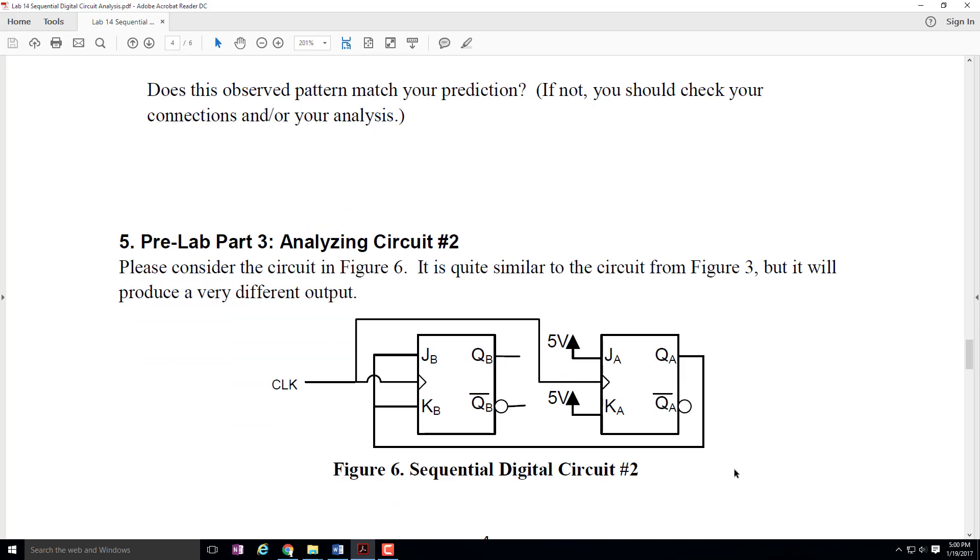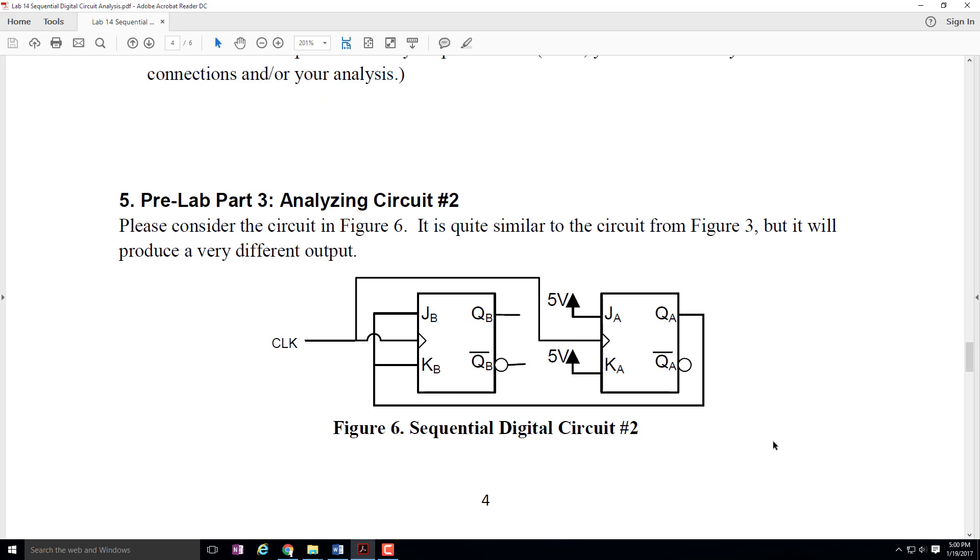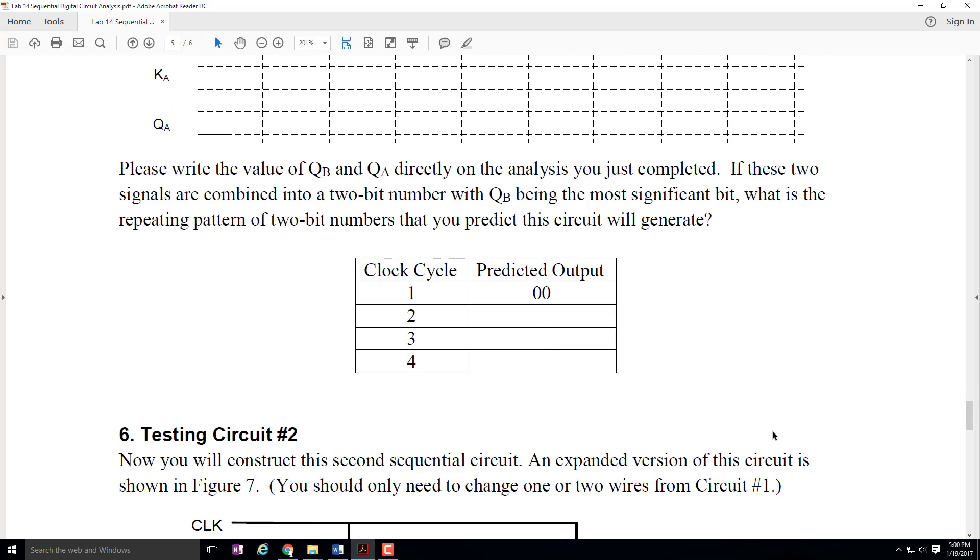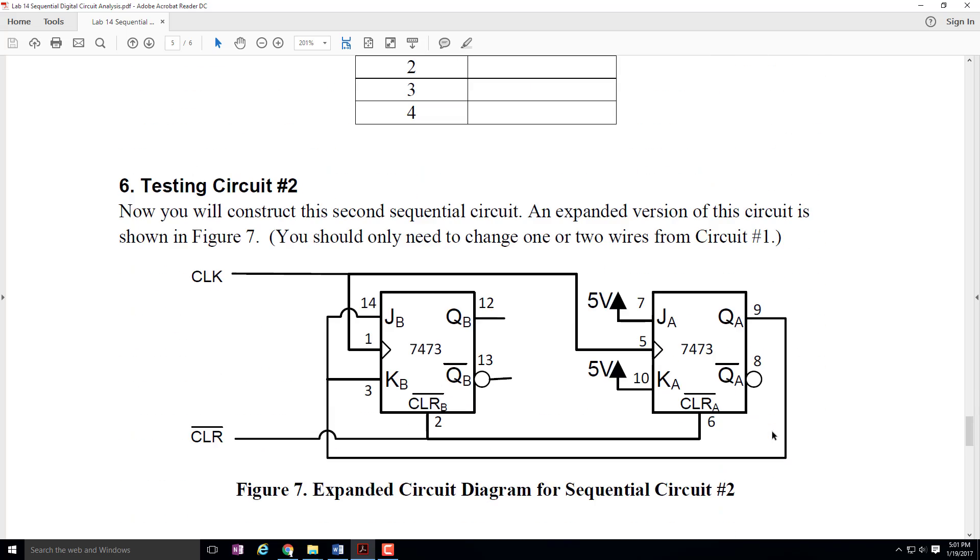And then second, we're going to have you analyze the second circuit. Here, instead of connecting to Q sub A bar, we connect up to Q sub A. This will actually generate a pretty significantly different pattern. So I'd like you to analyze it, just as before, and write the predicted outputs here, and then build the circuit.